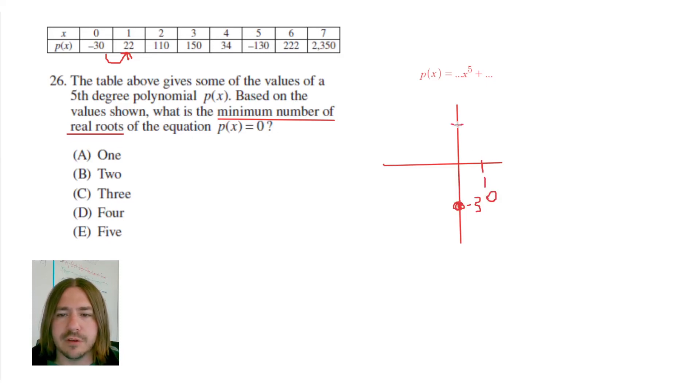The only way to get from one point—this is really sloppy, I apologize for that—but drawing with a mouse is not always easy. But basically the idea is that there's no way I can get from this point to this point without passing through the x-axis. So there has to be a zero there. So there has to be a zero from negative 30 to 22.